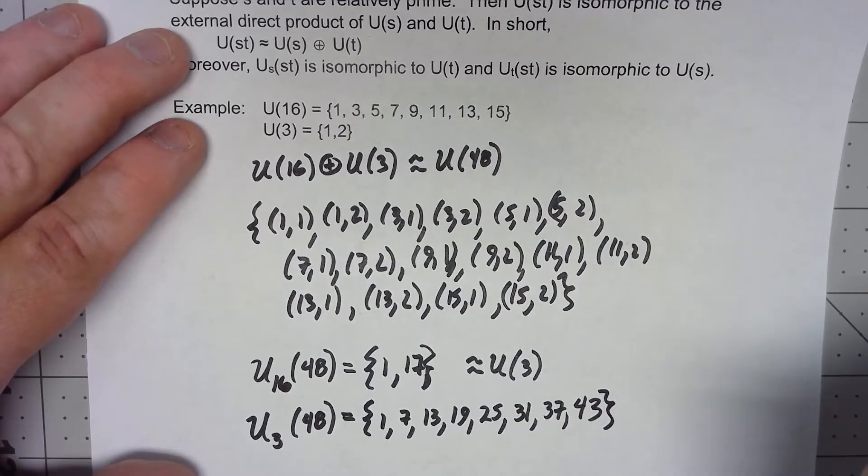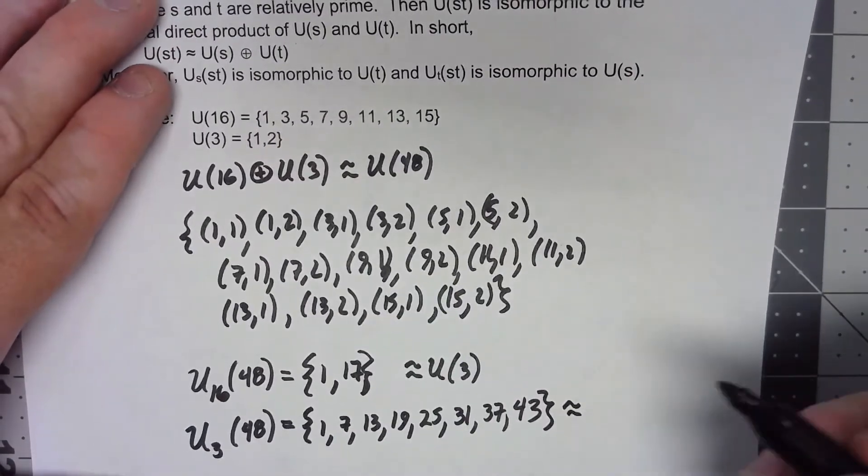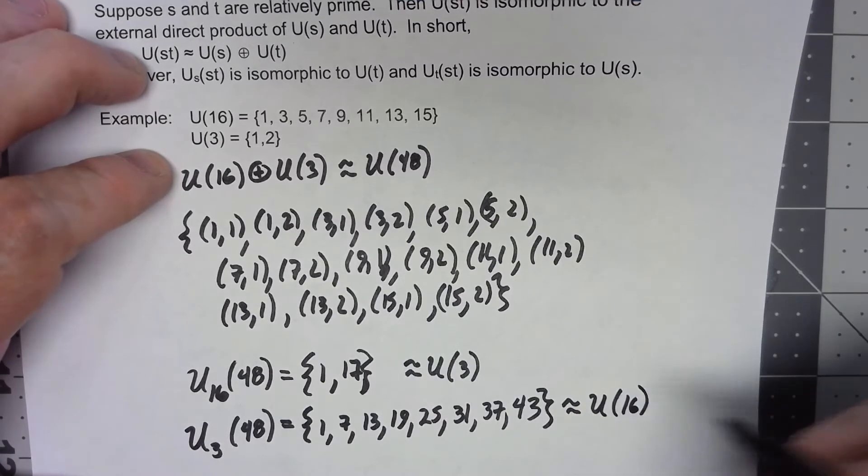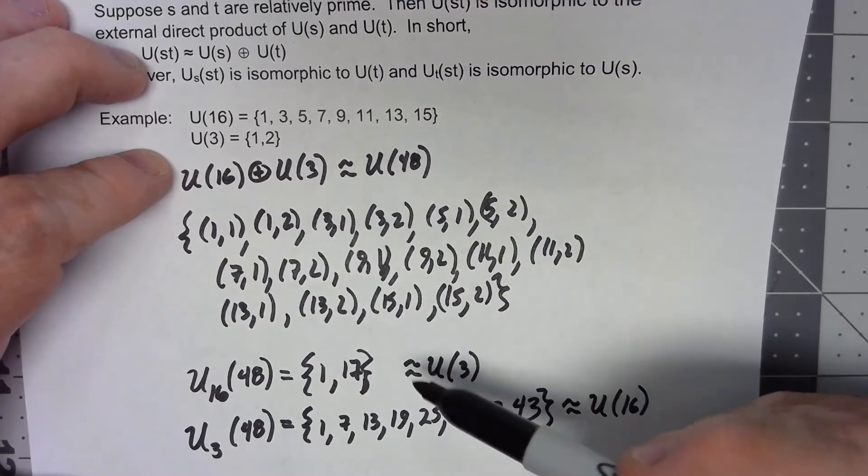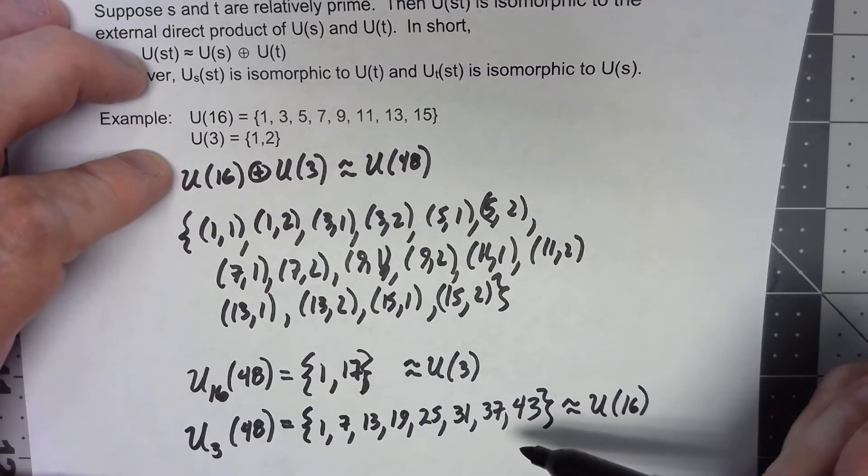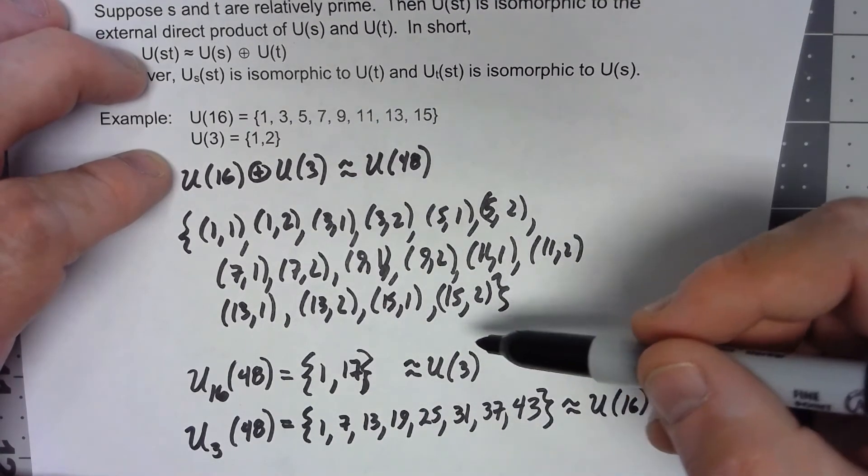Again the claim is that this is isomorphic to U(16). This one's a little bit less obvious. I mean the one we had just two elements it was easy to see, this one's a little tougher. So in our proof we're going to show how we establish the isomorphisms between these different types of groups.